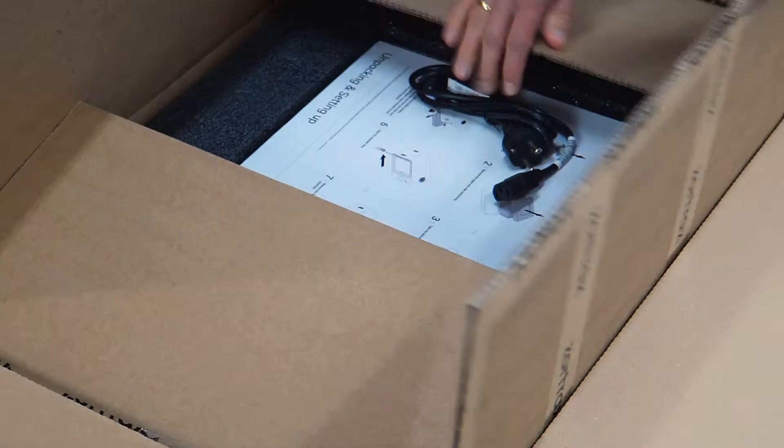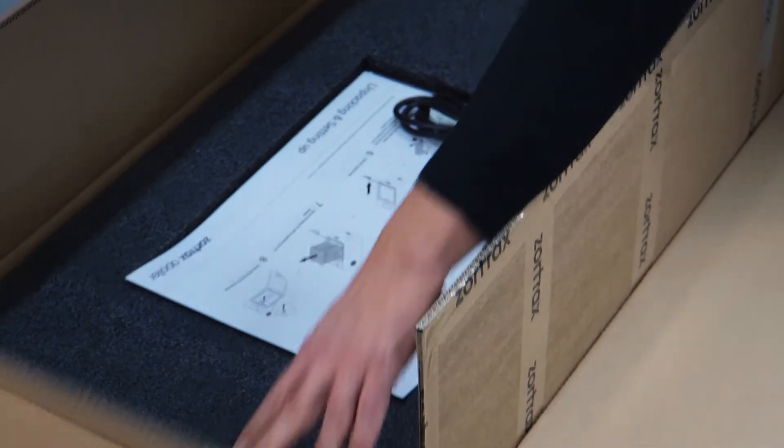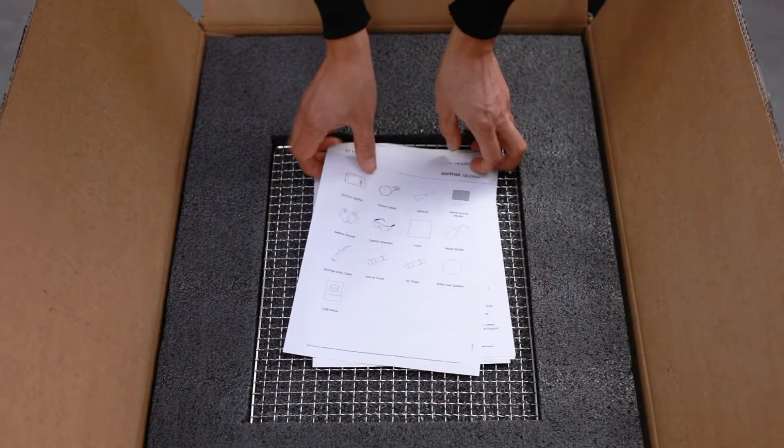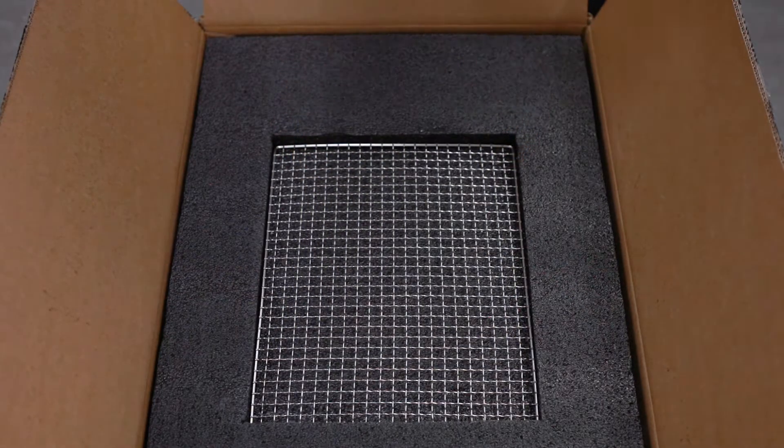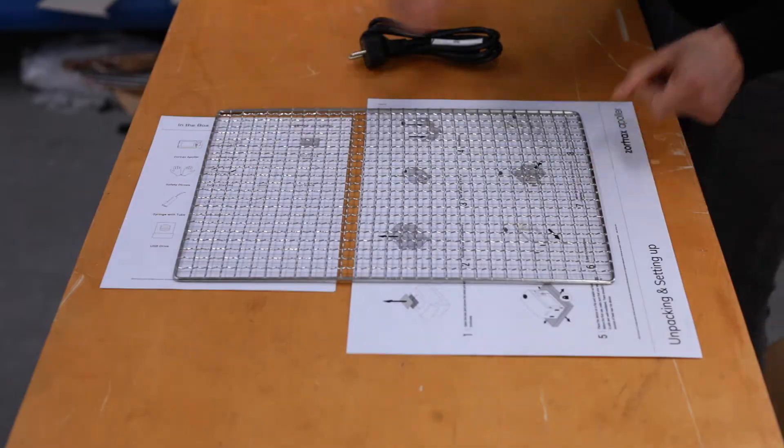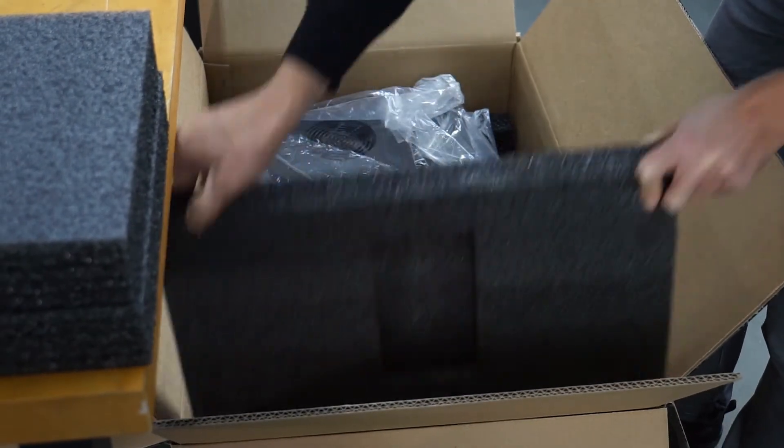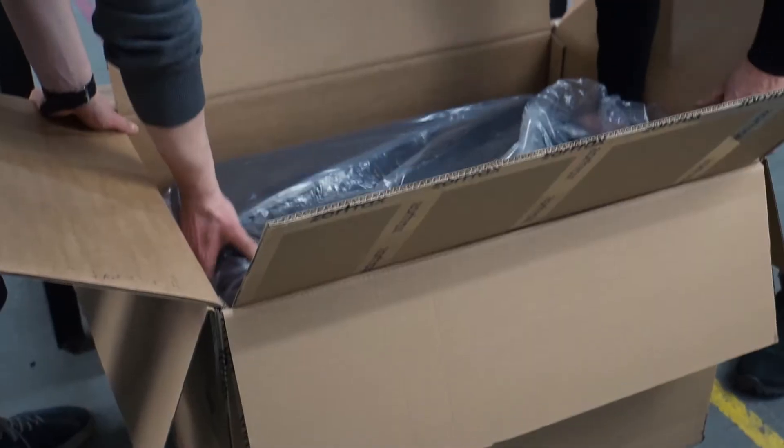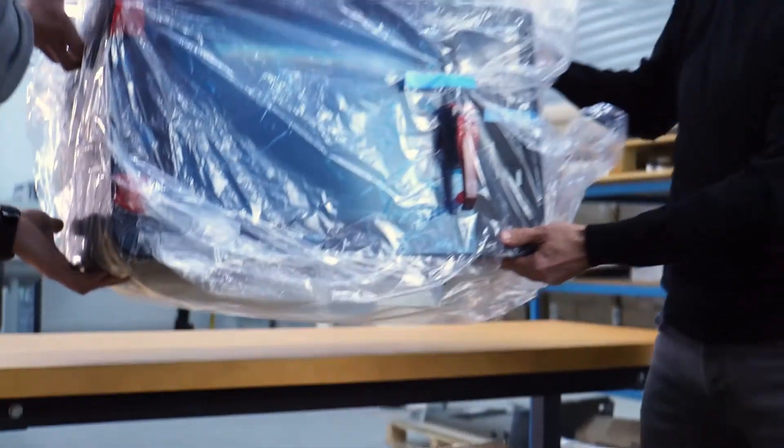Open the box and remove the metal grid and brochures. Remove the upper and side cushioning. Take the device out of the box.